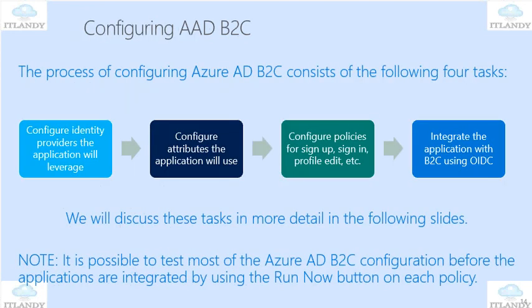How can we do the configuration of our AAD B2C? The process for configuring Azure AD B2C consists of the following four tasks. First, configure the identity provider for your application. Second, configure the attributes the application will be using. Third, configure policies for sign-up, sign-in, profile, password update, and so on.